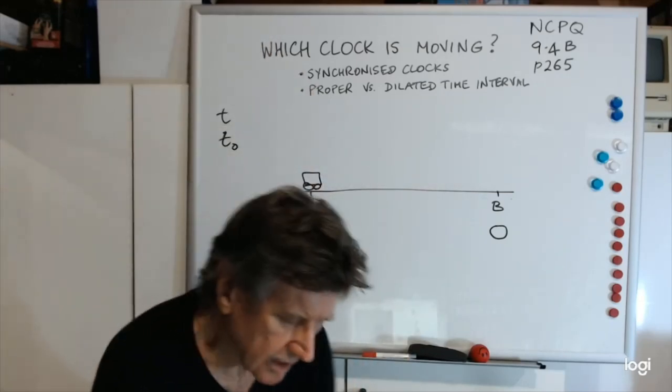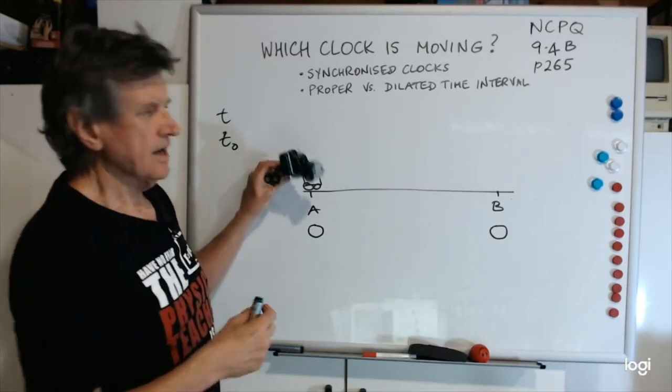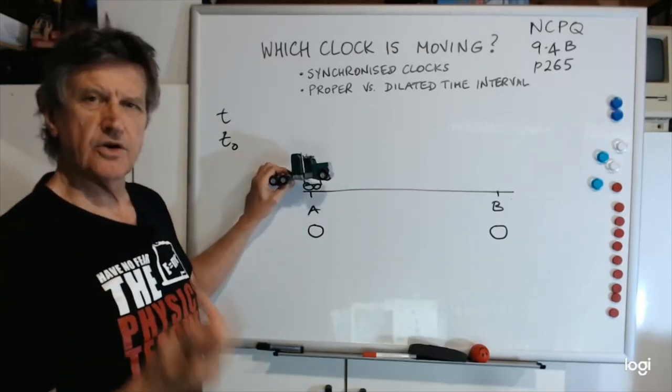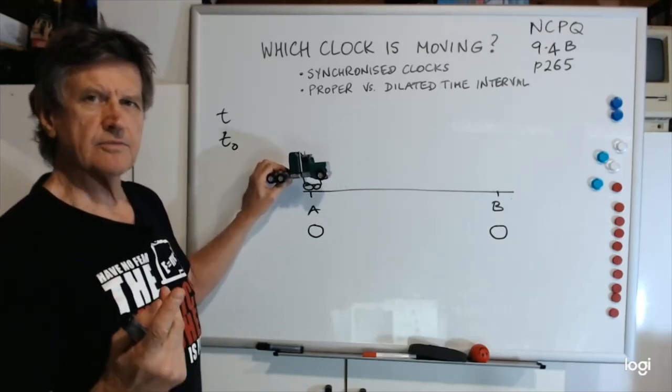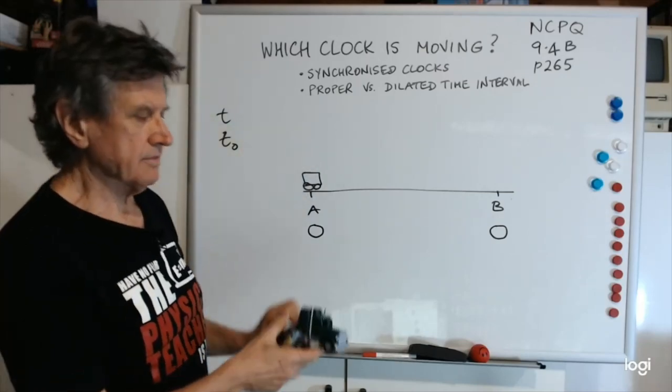The question is, we're getting two different values here, we're getting T and T0. Now the question is, which one is T and which one is T0? The simplest way is to think, we've got an event here which is the start of the journey and the finish of the journey. The event is start and stop. Now to the person aboard the truck, that start and stop occurs in the one place.